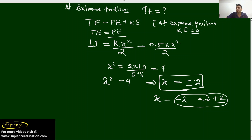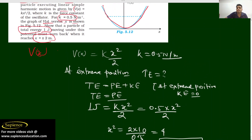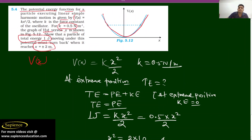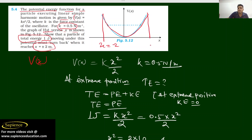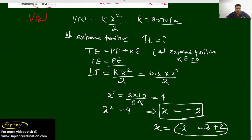From the figure we can now also understand this. From the figure we can see that the extreme position is at x = 2. x = −2 is the left side extreme position and x = +2 is the right side extreme position. I hope you have understood this figure, the solution, and the concept of solving the problem. Thank you everyone.